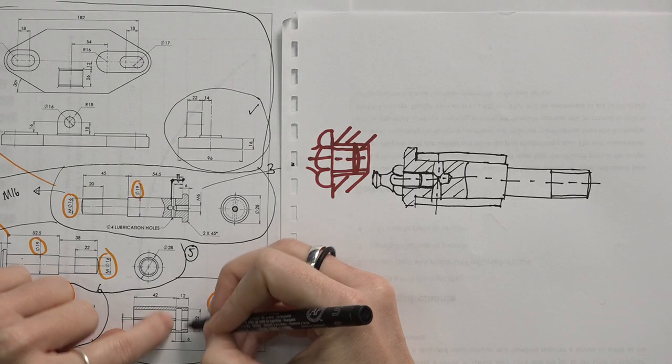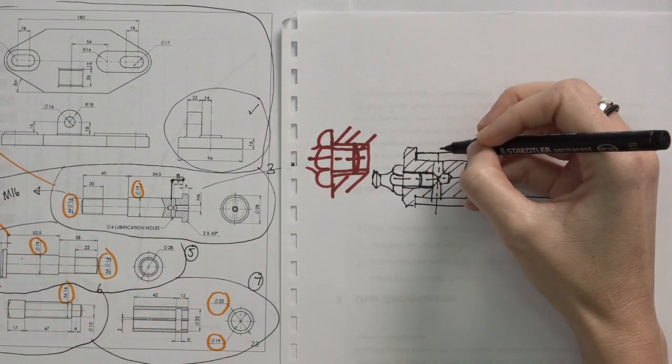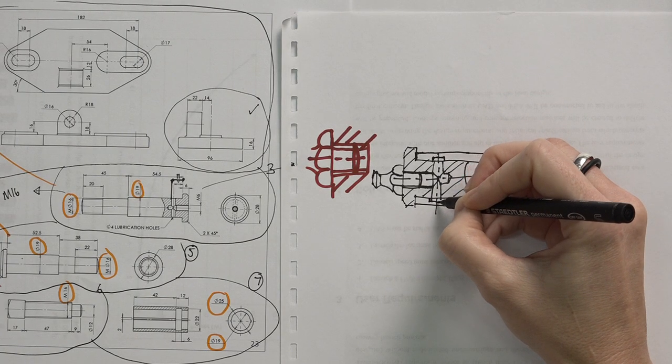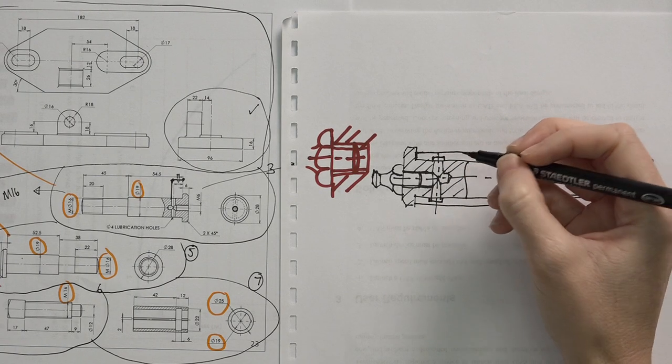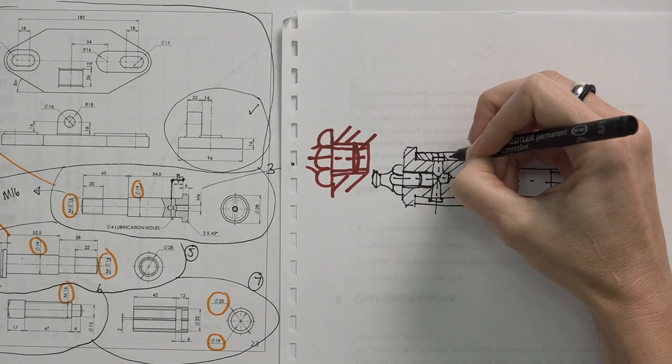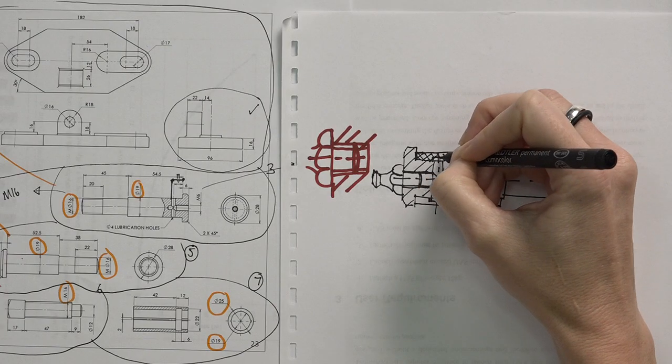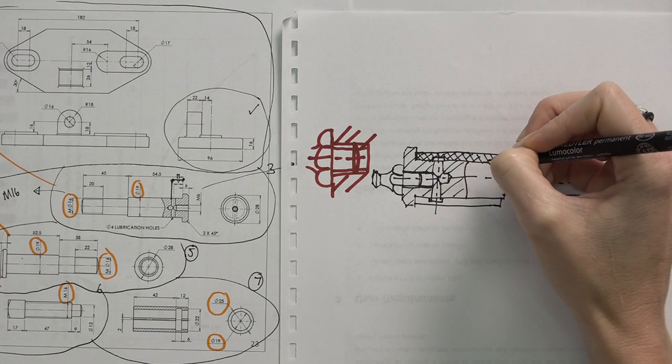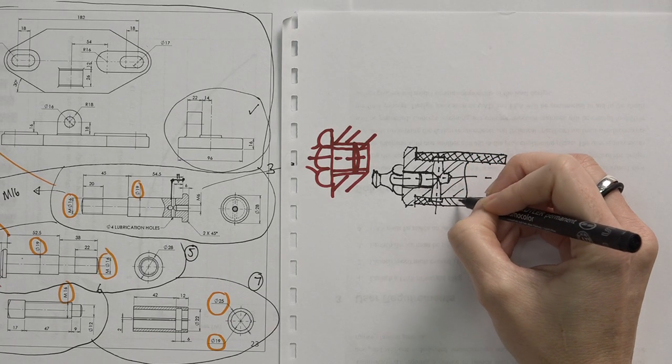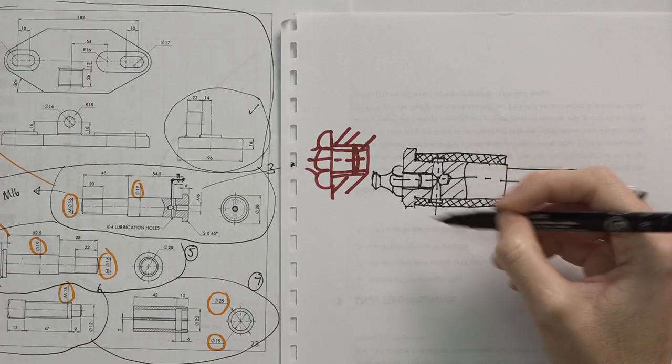So again, you can look at the dimensions here. This gap is six. What we have here is nine, so it will start at seven. So it means that we have this part of the bush running completely over and along the lubrication holes like that. So once we've drawn that in, we can do the cross-sectioning for the bush. And then we have that part of the assembly complete.